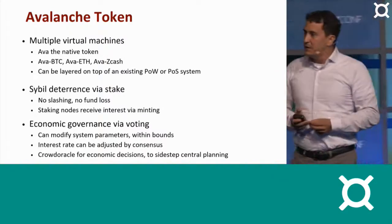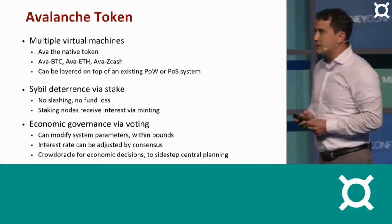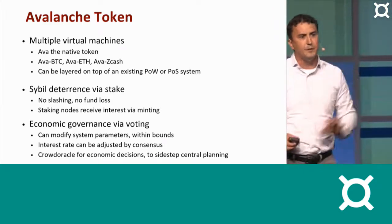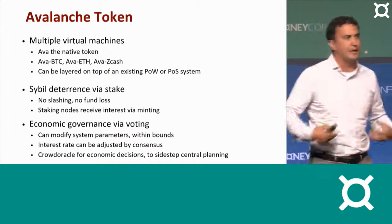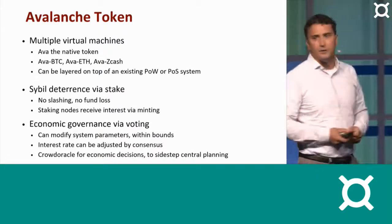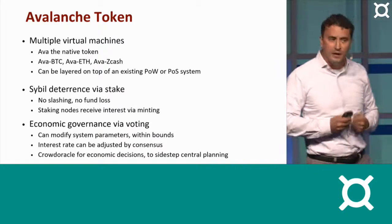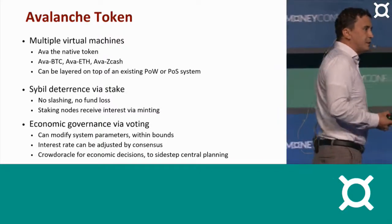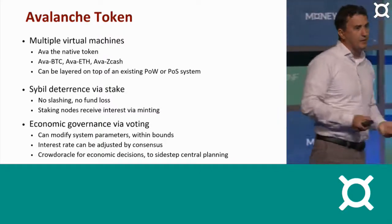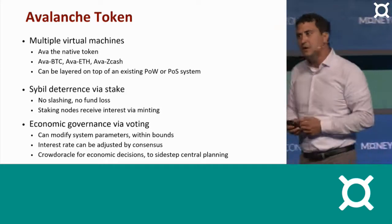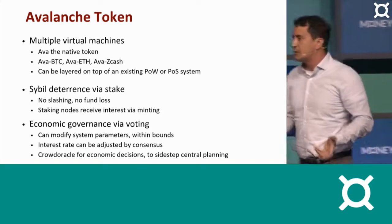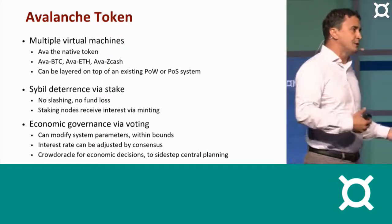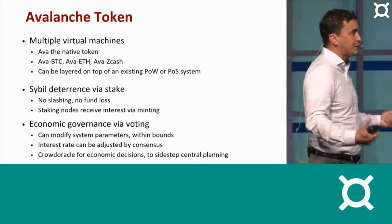I want to tell you a little bit about the new token we're going to be building on top of this mechanism. The core idea was subsampled voting — sampled, sampled, sampled. After about 13 rounds, I look around, and we've all decided. One of the first things we want to build with this is a new native token. We call it AVA, short for Avalanche. And AVA is going to support all of those things that you are familiar with supporting.